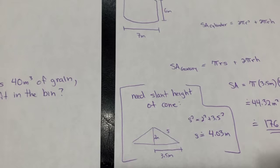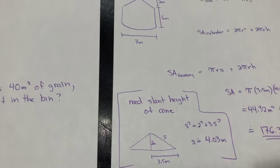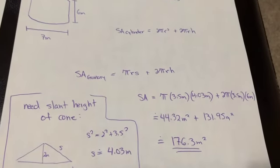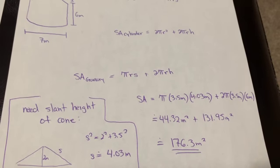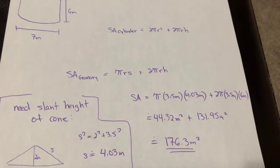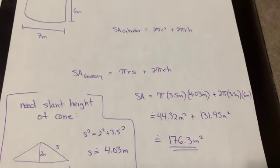In fact, 4.03 meters for the slant height of that cone. So when I go over to the calculation, I have pi RS for the cone piece, 2 pi RH for the cylinder piece. I add them together. I get 176.3 square meters.